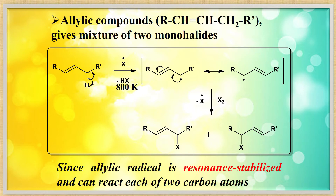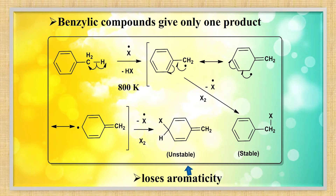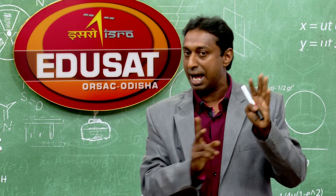The allylic free radicals undergo resonance. Therefore, if you take an allylic compound of the type R-CH=CH-CH2- where R and R' are different groups, you may get two different types of allylic free radicals from which the chlorine atom will attack, giving two different products. However, a benzyl compound gives only one product.